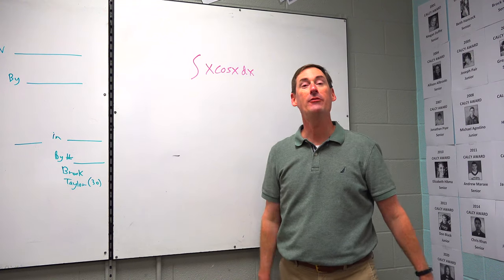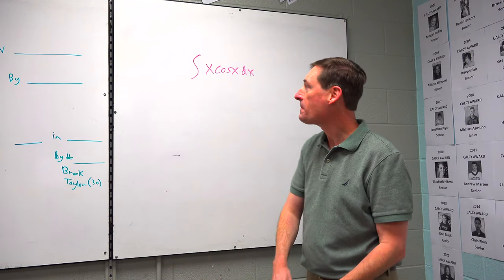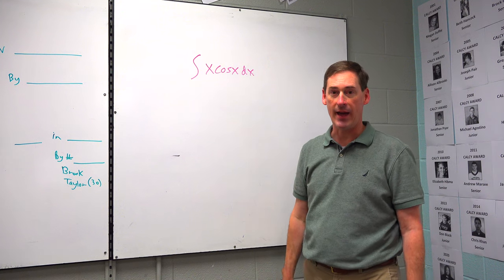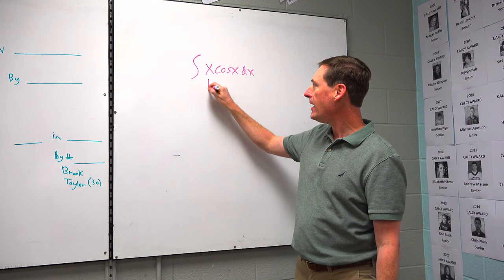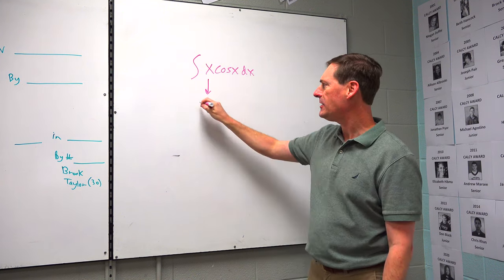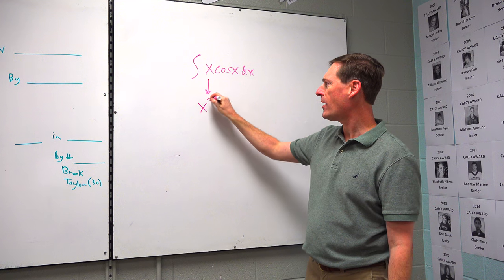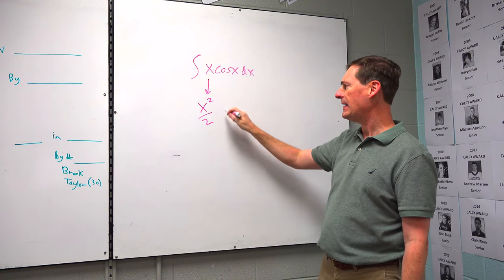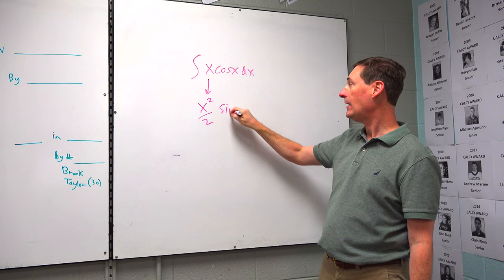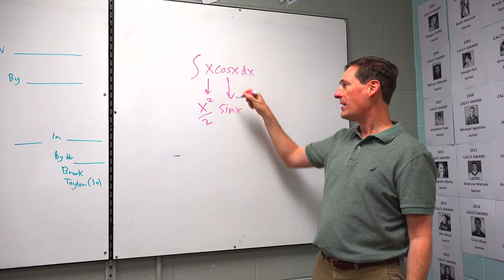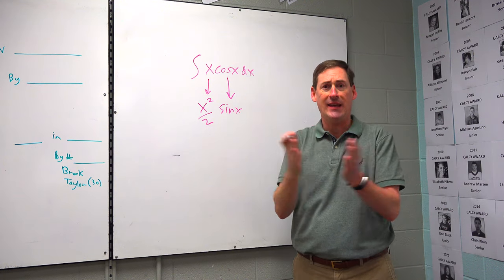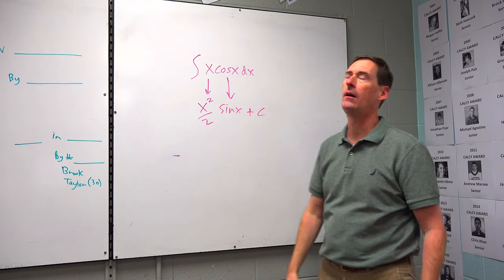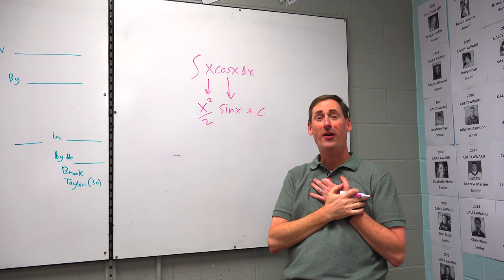You want to give your calculus teacher a heart attack? Integrate x times cosine of x and say: x integrates to be x squared over two, and the integration of cosine is sine. So I'll just do the integration of each one, sandwich them together, make an integration sandwich, and then put a plus C at the end. Oh gosh, you're giving me a heart attack!